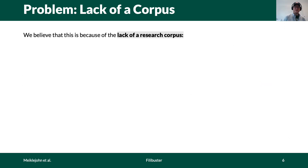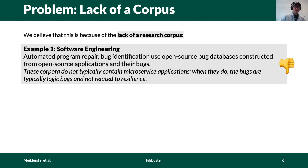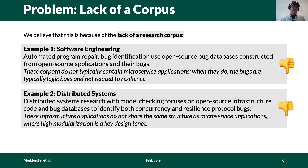We believe that the lack of resilience engineering research is due to the lack of a corpus. If we look at the software engineering community, automated program repair and bug identification research rely on open-source bug trackers constructed from GitHub that contain bugs to perform evaluations. These corpora typically do not contain microservice applications, and when they do, the bugs are typically logic bugs and not related to the architecture or resilience. In the distributed systems community, a lot of model checking work is focused on concurrency and resilience bugs in protocol implementations such as Cassandra or ZooKeeper.